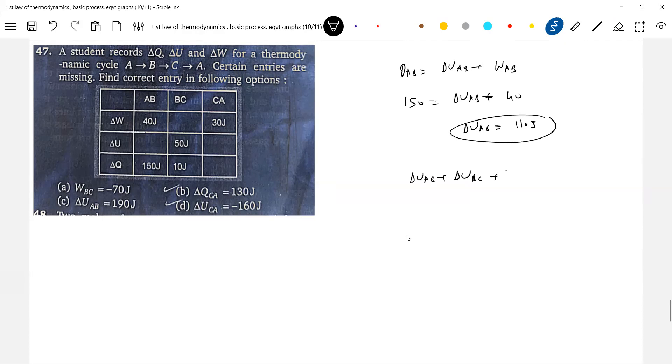ΔU_AB plus ΔU_BC plus ΔU_CA, everything should be equal to zero in a cyclic process. In a cyclic process, what should be the change in internal energy? It should be zero. So we know ΔU_AB is 110, ΔU_BC is 50. So 110, you remove 50, so we'll be left over with 60 joules.